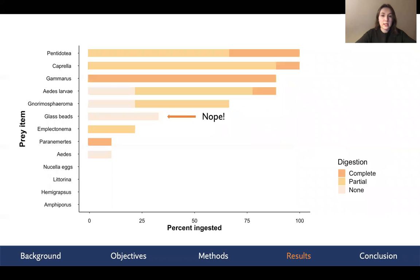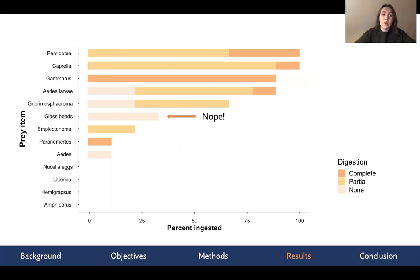Here is that same graph now broken down into levels of digestion. As you can see, the glass beads were in fact not digested. This suggests that while these anemones may consume whatever they come in contact with, they may be spitting items back out after a certain period of time. For that reason, digestion might be a better proxy for potential prey item preference.